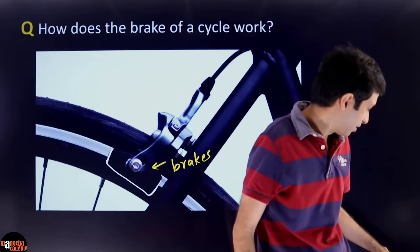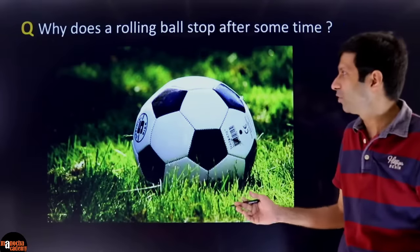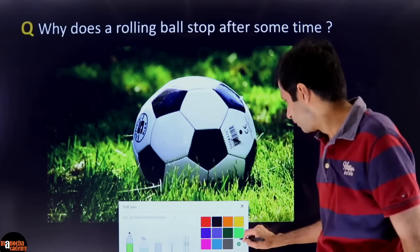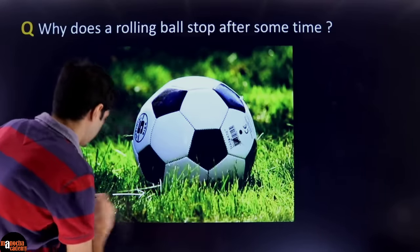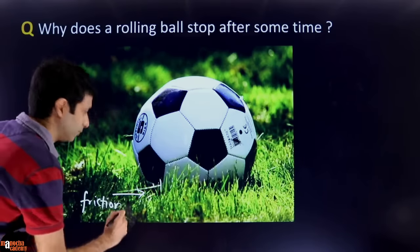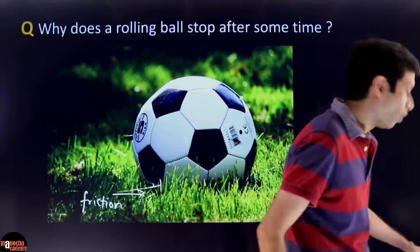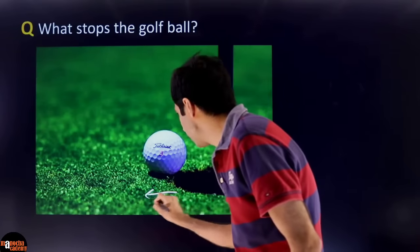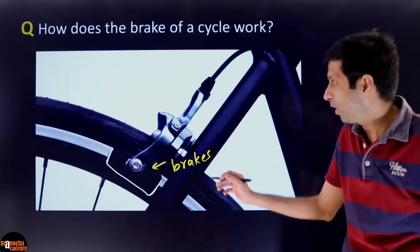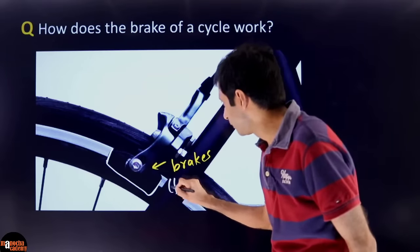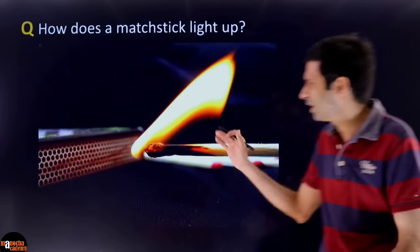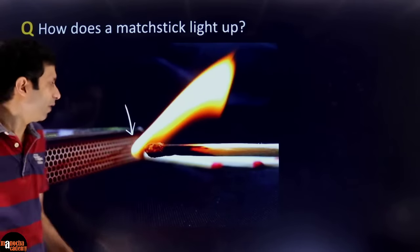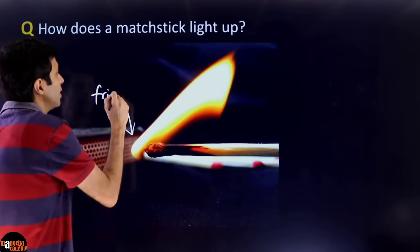If you look at all these questions, the answer is friction. What stops the rolling ball? It is the force of friction — on the grass, it is the force of friction that stops the ball. When the ball is rolling, friction on the grass is going to stop it. In the bicycle brakes, it is friction that is acting. And between the matchstick and the matchbox, you can see that rough surface — it is that friction which generates heat and causes the matchstick to burn.